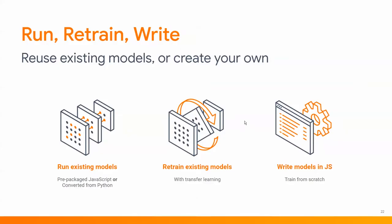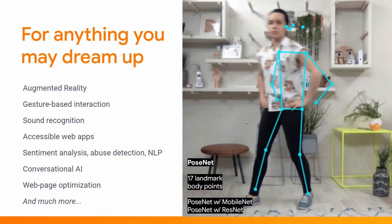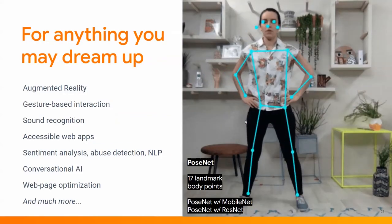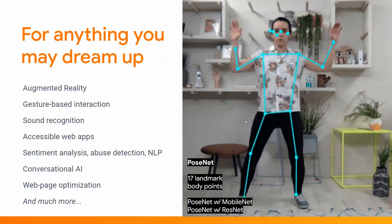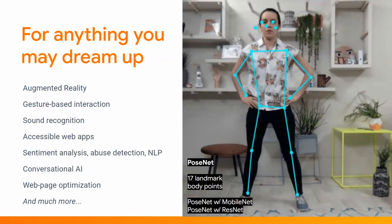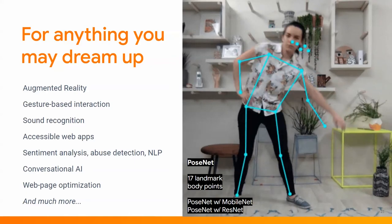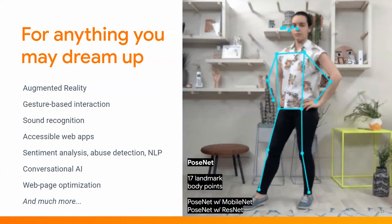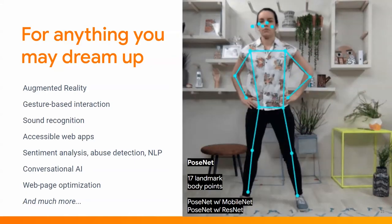With TensorFlow.js, you can run, retrain via transfer learning, and write machine learning models completely from scratch — just like you could in Python. That allows you to dream up anything you might want: augmented reality, gesture recognition, sound recognition, conversational AI, and much more. You can do that in JavaScript now, giving you superpowers in the browser and beyond.